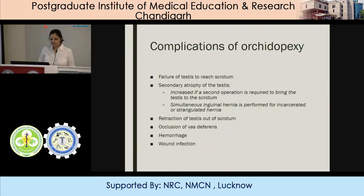Complications of orchiopexy include failure of testes to reach the scrotum. Secondary atrophy of testes has also been described, occurring usually if a second operation is required to bring the testes to the scrotum or if there is a simultaneous inguinal hernia repair performed for incarcerated or strangulated hernia. Other complications include retraction of testes out of scrotum, occlusion of vas deferens, hemorrhage, and wound infection.